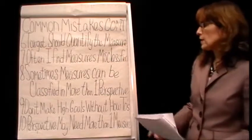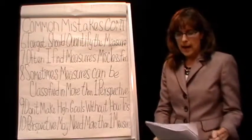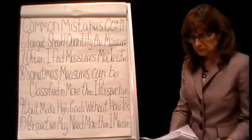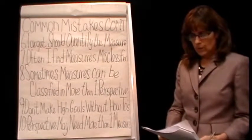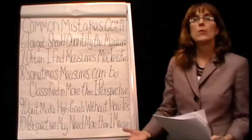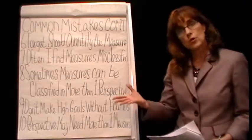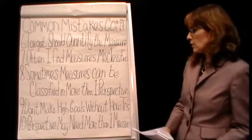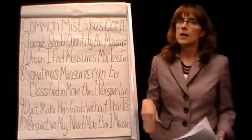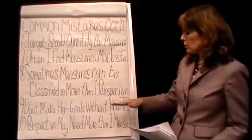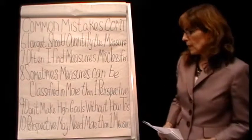Don't make high or aggressive goals without giving some of the how-to's. Jane Doe didn't just state she wanted to reduce training costs by 40% — she explained how they were going to do it. They were going to use e-learning modules and reduce travel costs related to training. So tell me how you're going to do it. Don't just say we're going to increase revenues 20% — give a little bit of the how-to's and what your plan is.